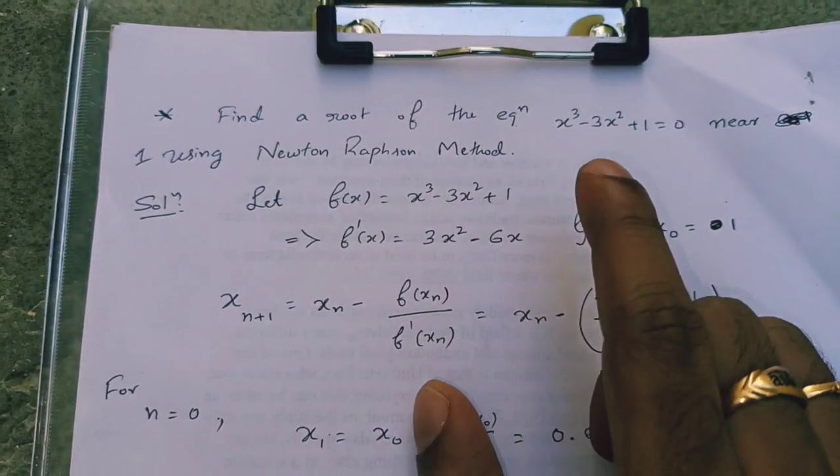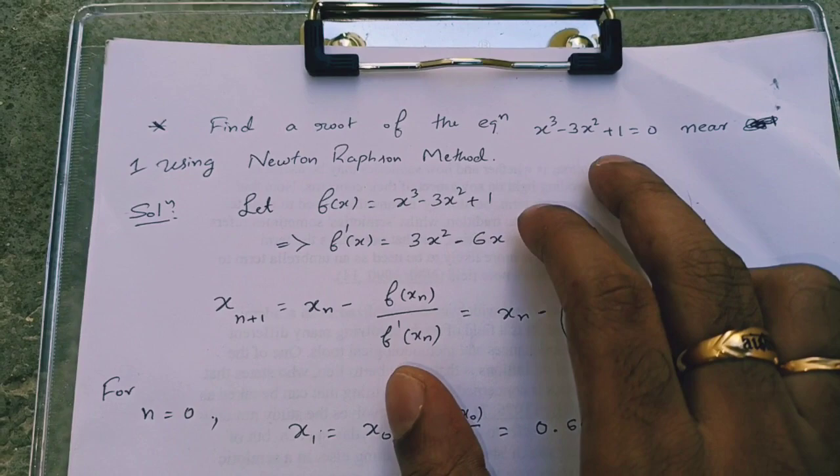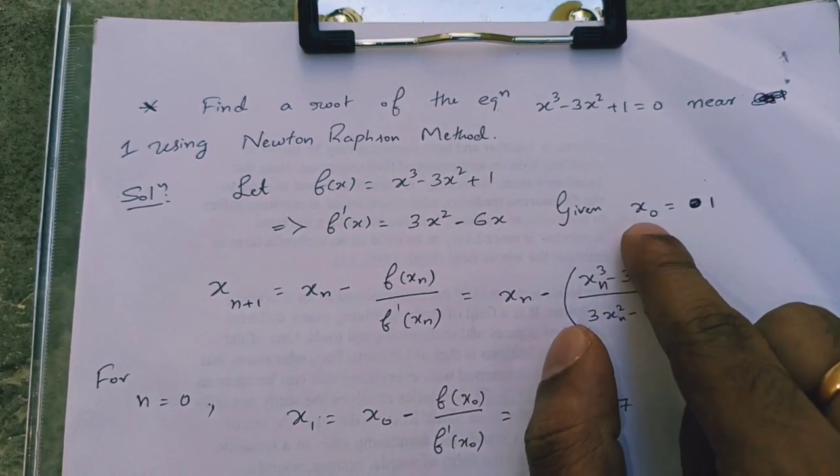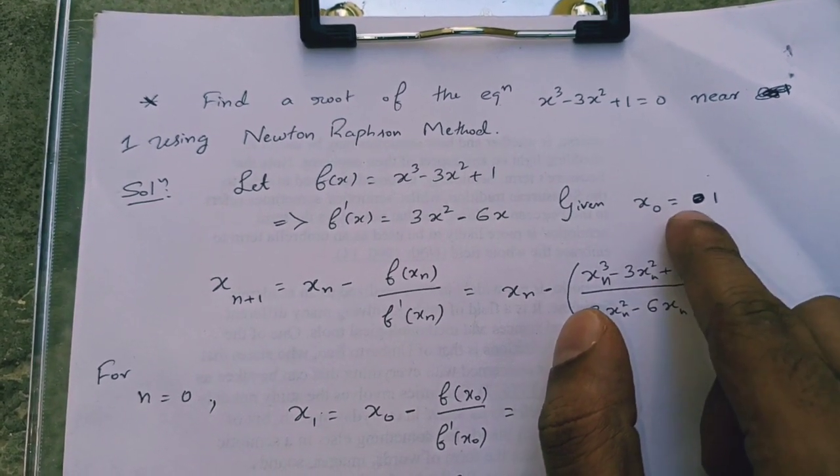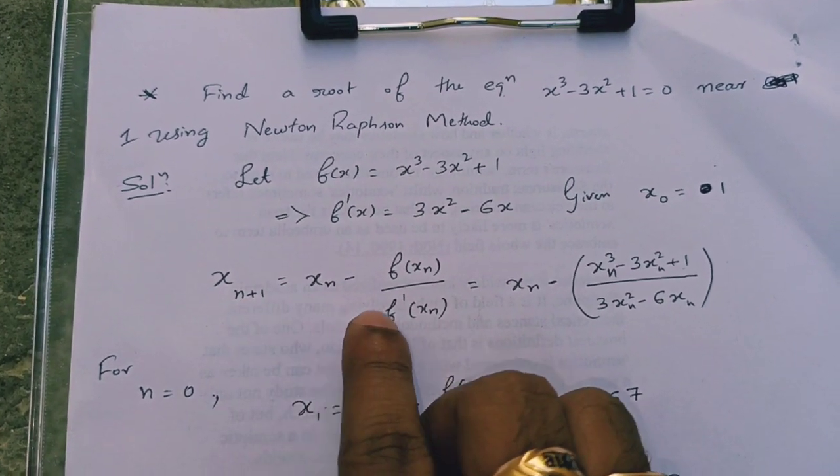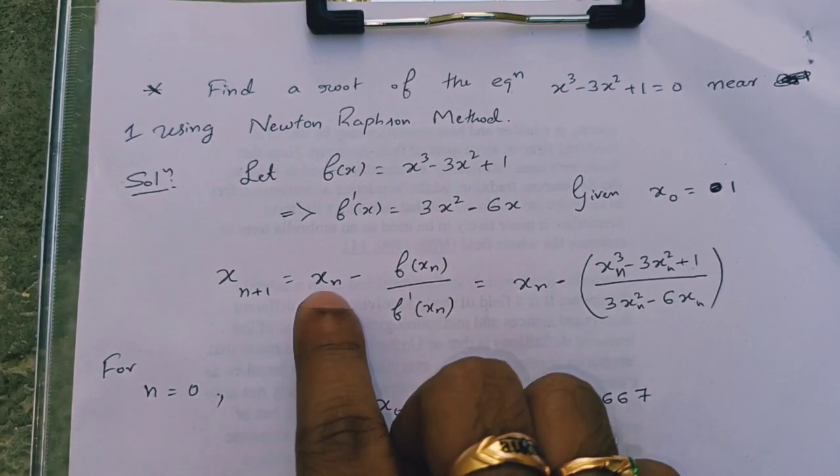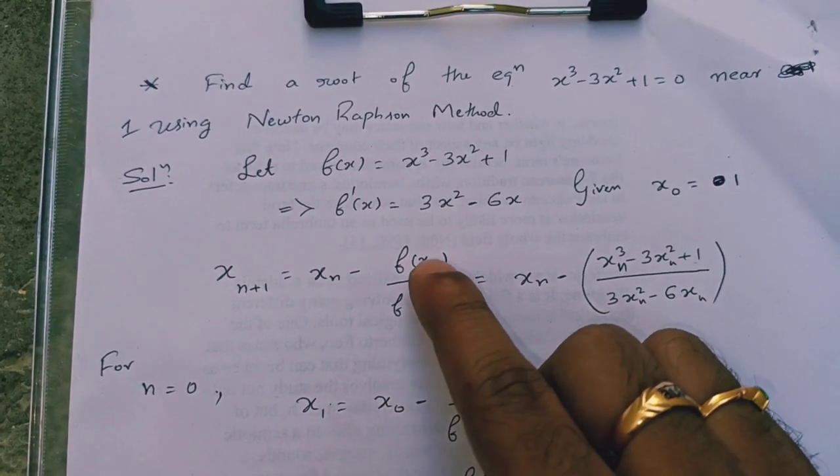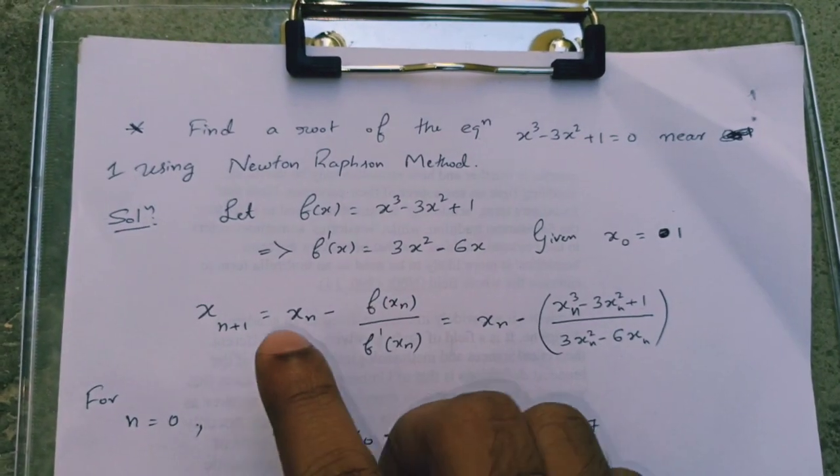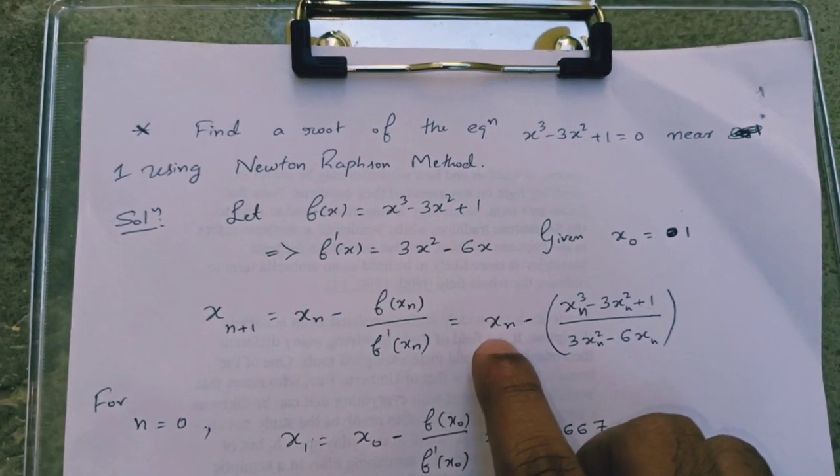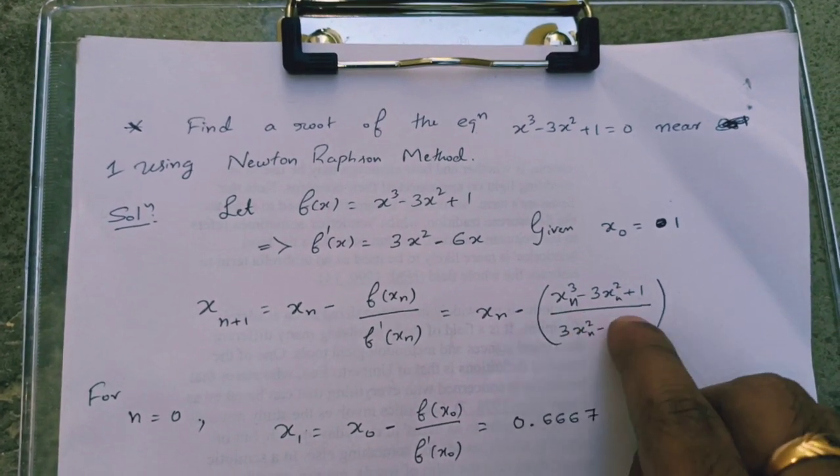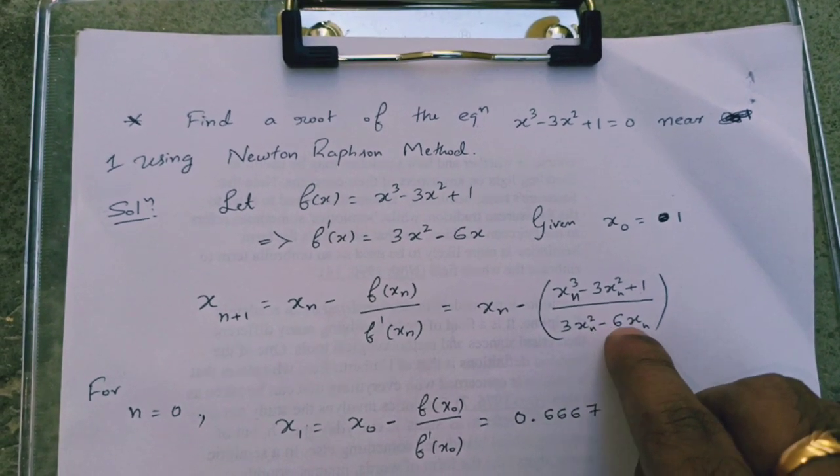In the problem, it is mentioned that we have to find out the root near 1. So we take the initial approximation x naught is equal to 1. To find the n plus 1 approximation, we have this formula x n plus 1 equal to x n minus f of x n by f dash of x n. So we have x n plus 1 is equal to x n minus x n cube minus 3x n square plus 1 divided by 3x n square minus 6x n.